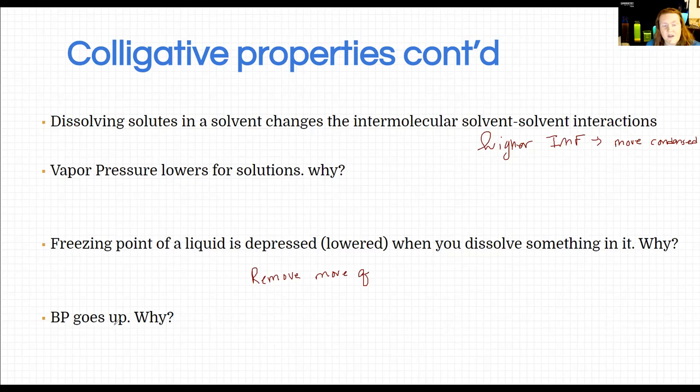It makes sense then that the temperature of the boiling point has to increase because you're going to have to add more heat in order to separate those stronger IMF. So it's the same reason the freezing point is depressed, but they go in opposite directions.